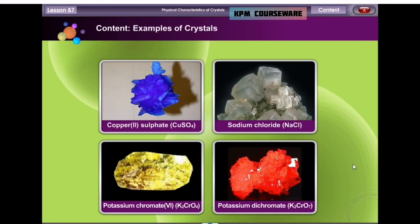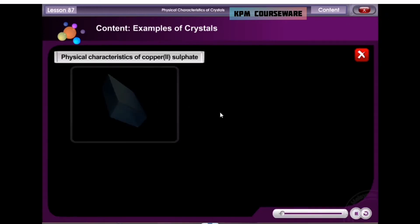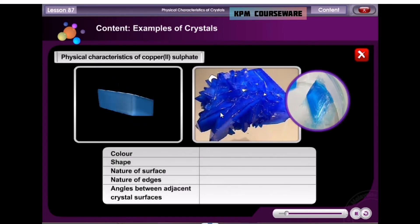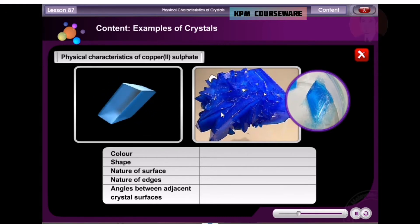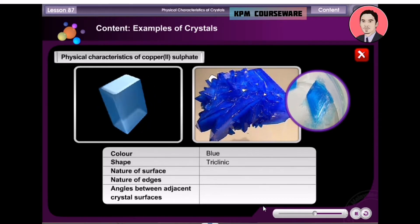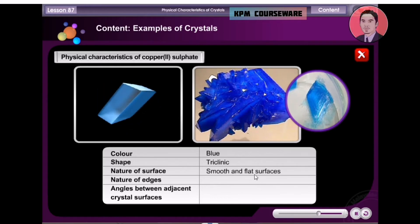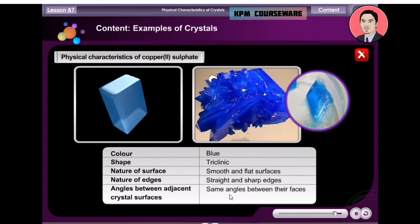Now that you know the physical characteristics of crystals, let us take a closer look at some examples of crystals. Click on the crystals. This is a copper-2-sulfate crystal. The copper-2-sulfate crystal is blue in colour. It has a triclinic shape, smooth and flat surfaces. Its edges are straight and sharp, and it has the same angles between their faces.